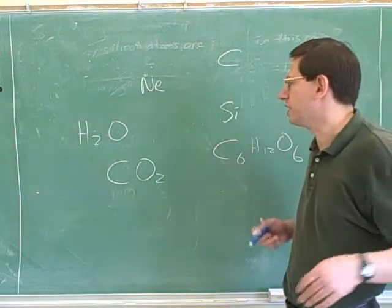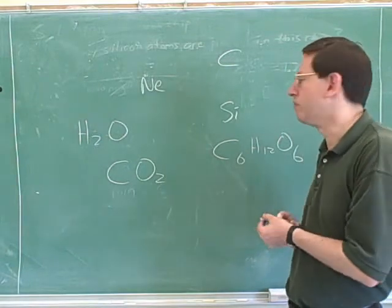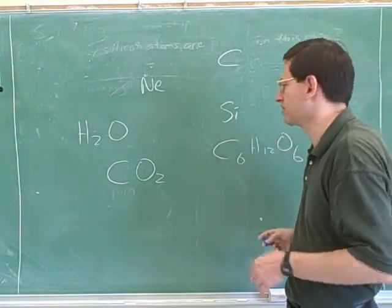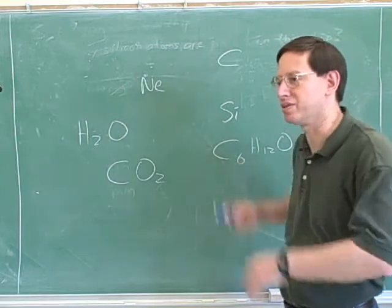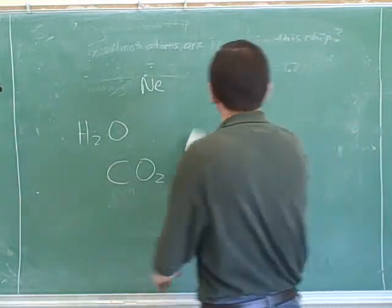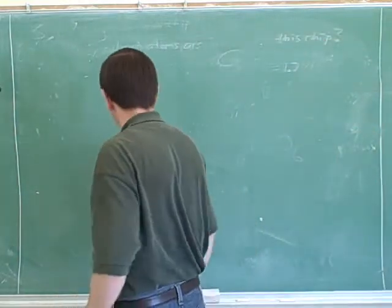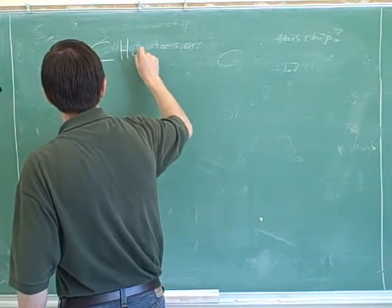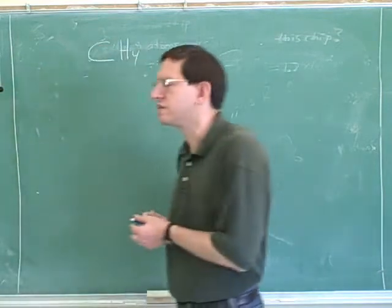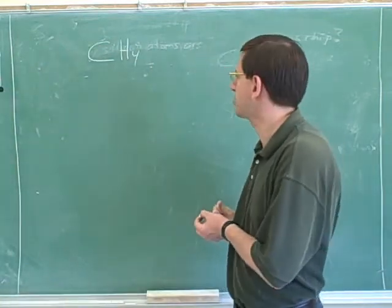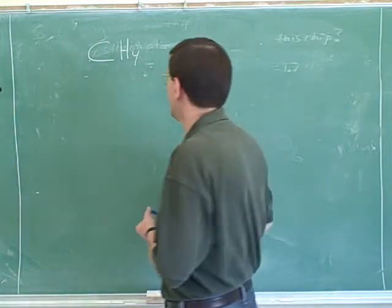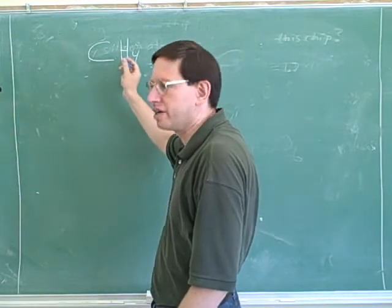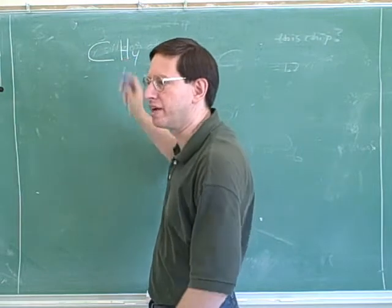A molecule is a collection of atoms, so most compounds are not just made out of one atom but out of collections of molecules. This is the formula for methane, which is natural gas. Each molecule of methane consists of one carbon and four hydrogens.